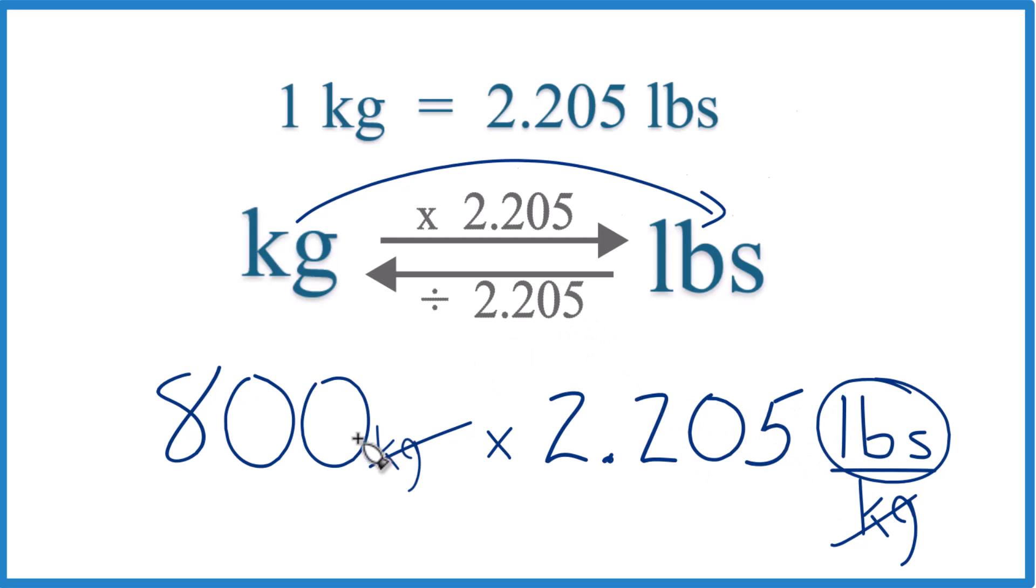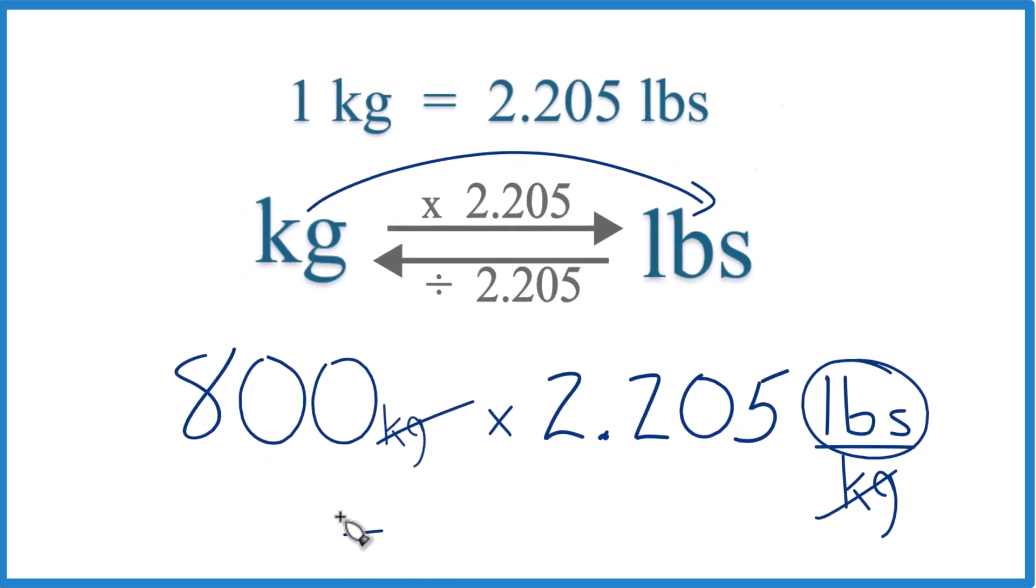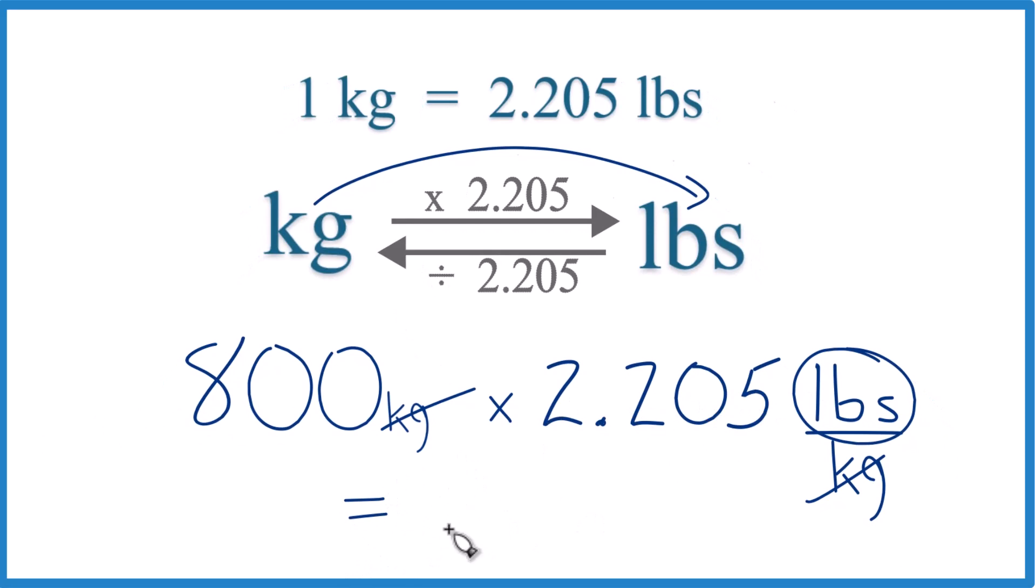That's what we're looking for. 800 times 2.205 pounds equals 1,764 pounds.